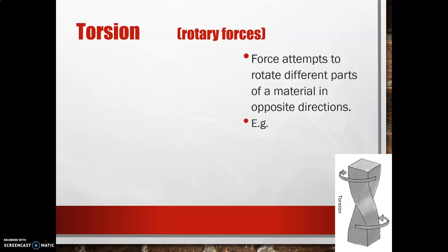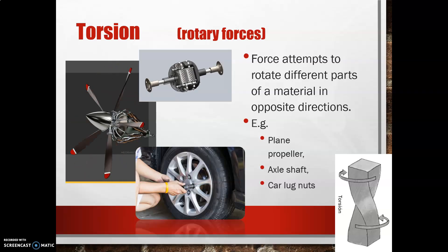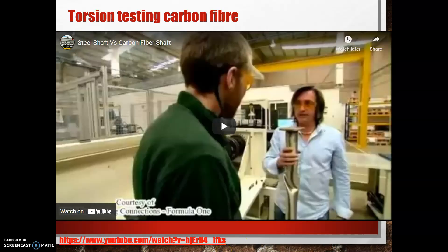Now let's take a look at torsion or torsional stress, which are rotary forces. People tend to get tension and torsion confused, so just remember there's an R for rotary in torsion. This is the force that rotates different parts in opposite directions. Examples include plane propellers, axle shafts and engines, and car lug nuts. Here is a torsion testing facility where they're trying to improve Formula One car axles that run between the front and rear wheels, comparing very lightweight metals and carbon fibre.